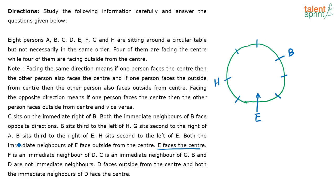It is given that B sits third to the left of H. So B is sitting third to the left of H. If this is the left of H, that means H is facing the center — because if H faces the center, this has to be its left and this has to be its right. So B being third to the left of H confirms H faces the center.